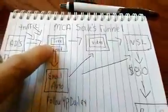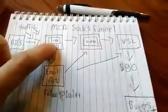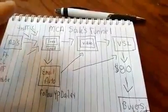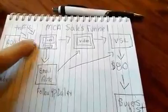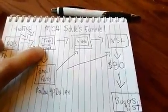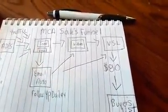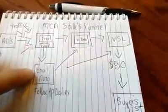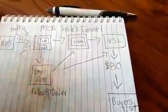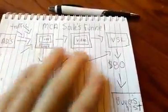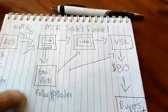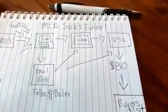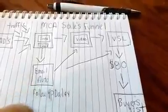Then the first thing you want to direct them to is a capture page. This is where you're going to offer them something free of value, whether it be a free video or free PDF, something of value in order to obtain their email address. The reason you want to do this is because you want to build your email list, because not everybody that goes through this funnel is going to join you and MCA on the first time seeing it. So when you build your email list, you can follow up with them.